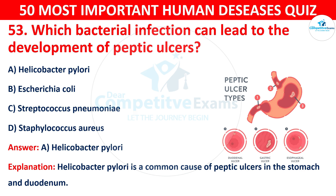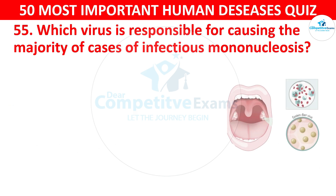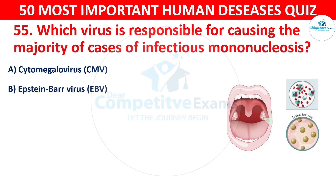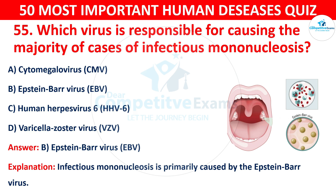Question 54: Which virus is responsible for causing the majority of cases of infectious mononucleosis? The options are: A) Cytomegalovirus (CMV), B) Epstein-Barr virus (EBV), C) Human herpesvirus 6 (HHV-6), or D) Varicella-zoster virus (VZV). The correct answer is B — Epstein-Barr virus. Infectious mononucleosis is primarily caused by the Epstein-Barr virus.